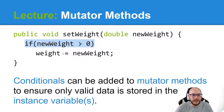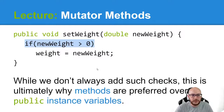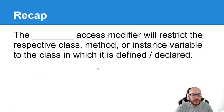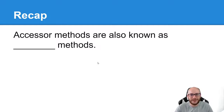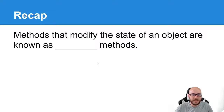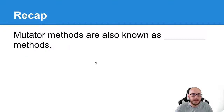In practice we don't always add every check, and we hope that people using our programs are smart enough not to put erroneous values in. In enterprise or production code, yeah, they're putting those checks in to ensure they're getting only legitimate values. For this class, I'll assume the driver just won't do silly things like enter a negative weight. To recap: the private access modifier restricts the respective class, method, or instance variable to the class in which it is defined. Methods that return information about the state of the object without modifying it are accessor or getter methods. Methods that modify the state of an object are mutator or setter methods.